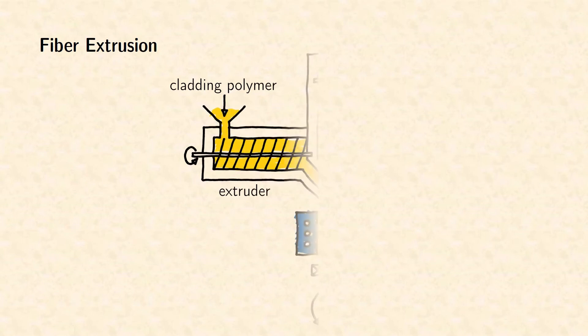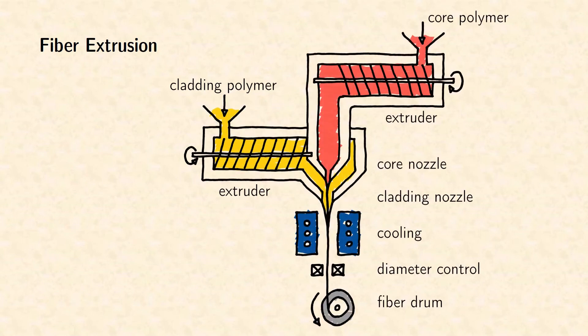Polymer optical fibers are usually fabricated by extrusion. Extrusion is a continuous process and allows to fabricate endless fibers from polymer granulate. The structure of core and cladding requires the co-extrusion of two materials.